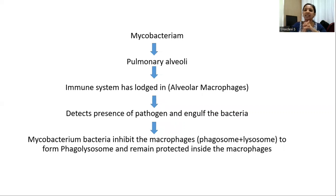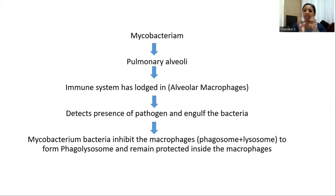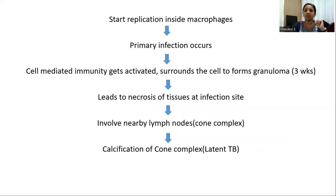Mycobacterium bacteria infect the macrophages to form a phagolysosome and remain protected inside the macrophages. The bacteria then start replication inside the macrophages.